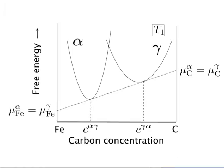If I now draw a common tangent to free energy curves, the free energy of iron in alpha is the same as the free energy of iron in gamma, and the free energy of carbon in alpha is the same as the free energy of carbon in gamma. There is no driving force for diffusion - that is why this gives you the equilibrium compositions. Diffusion is not strictly driven by concentration differences but by free energy differences. To find equilibrium, the free energies of all the components should be identical in both phases - even if their compositions are different, there is no driving force for diffusion.